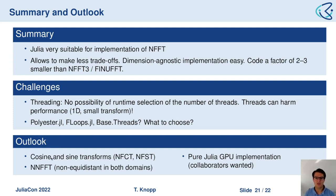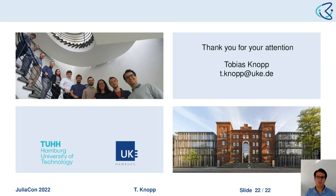For an outlook: still missing are the real variants of the NFFT — the NFCT and NFST (cosine and sine transforms). We would also like to implement the NNFFT, which is non-equidistant in both domains. We have a prototype of a pure Julia GPU implementation, but it is not ideal at this point. If anybody is interested in collaborating on this, we are open for collaboration. Thank you for your attention.